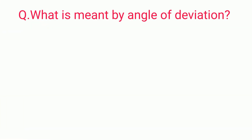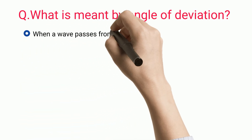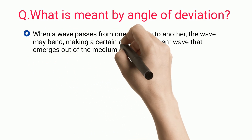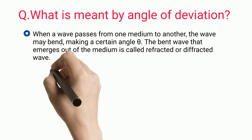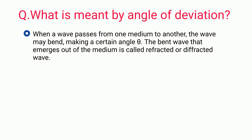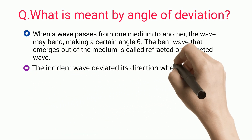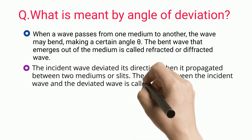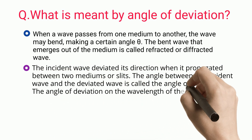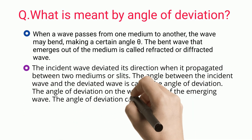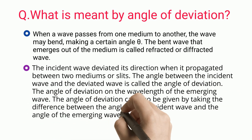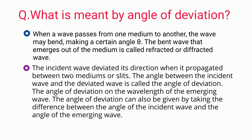Frequently Asked Questions: What is meant by angle of deviation? When a wave passes from one medium to another, the wave may bend, making a certain angle. The bent wave that emerges is called a refracted or diffracted wave. The angle between the incident wave and the deviated wave is called the angle of deviation, and it depends on the wavelength of the emerging wave.